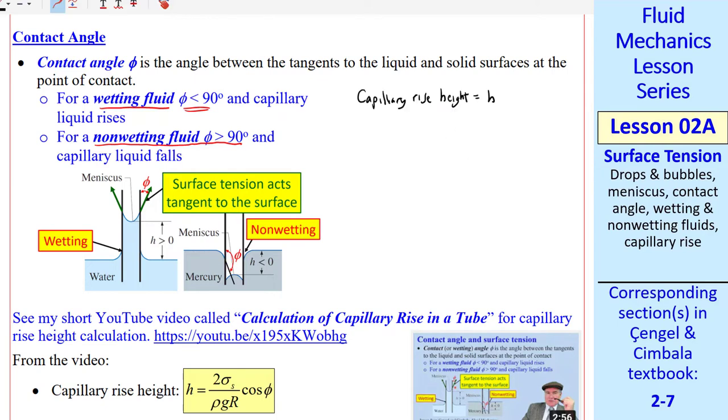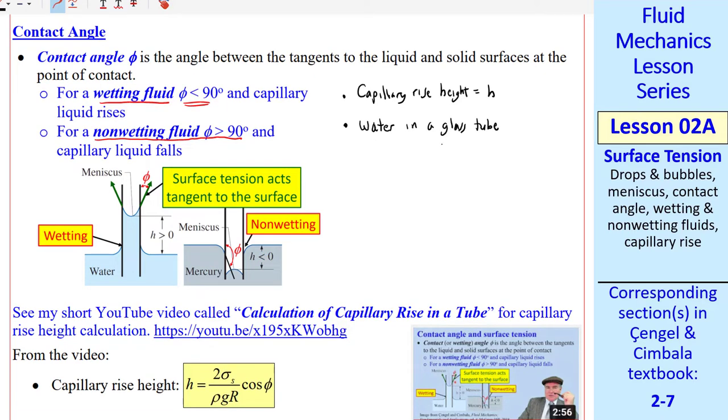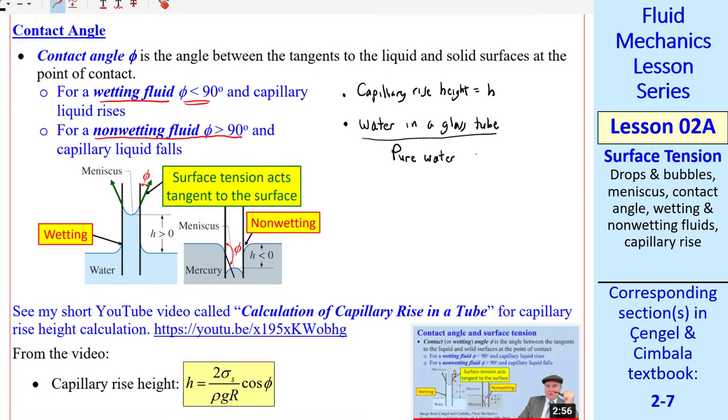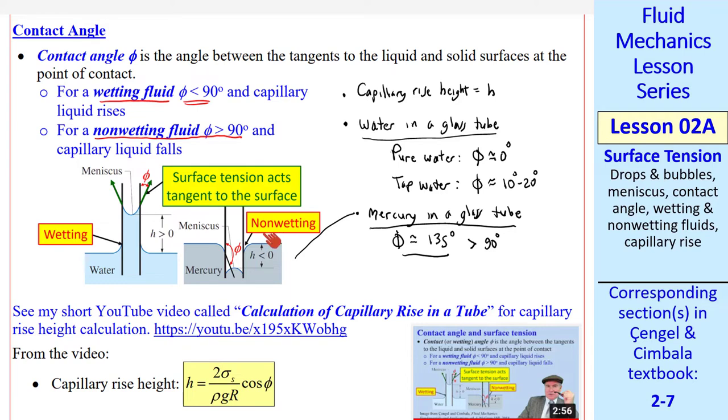The capillary rise height is H. For a wetting fluid, H is positive. For a non-wetting fluid, H is negative. Let's consider, for example, water in a glass tube. For pure water, phi is nearly 0 degrees. For tap water, phi is not 0, but depending on contaminants, it could be anywhere from, say, 10 to 20 degrees. Compared to mercury in a glass tube, phi is about 135 degrees, which is greater than 90. That's why we call mercury non-wetting, and that's why H is actually negative.